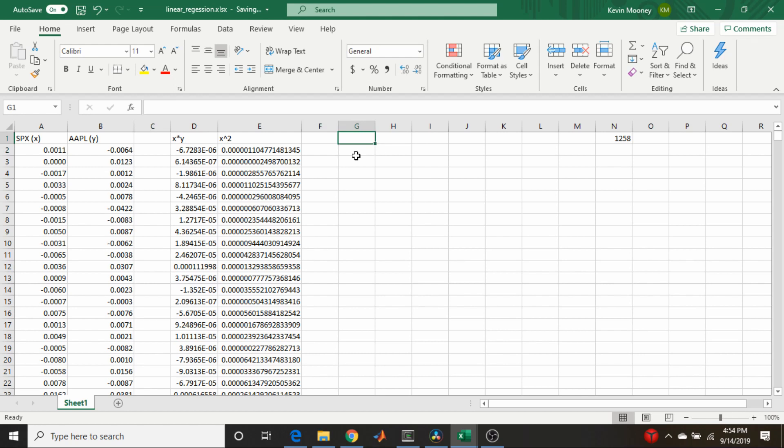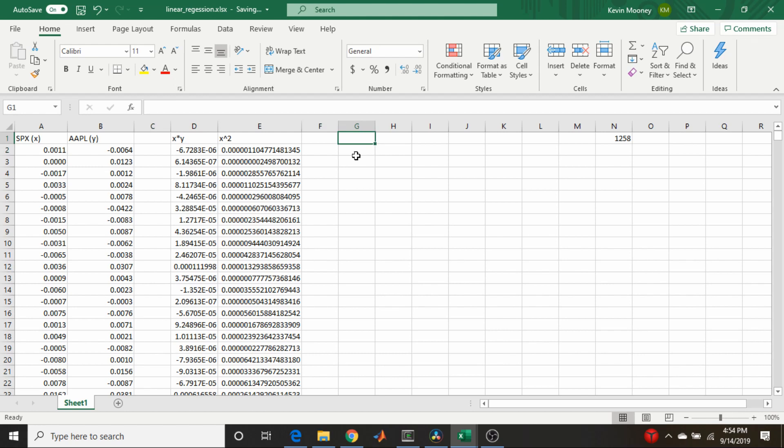On to the next part. And so we now need to sum up this x times y column. So we're just going to label this column sum of x, y. And it's the sum of all the elements of the d column.